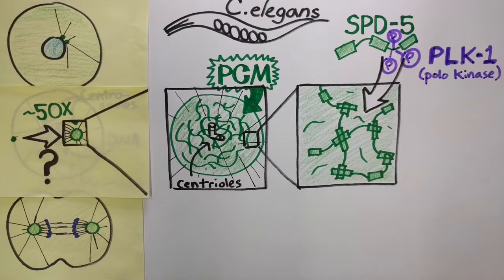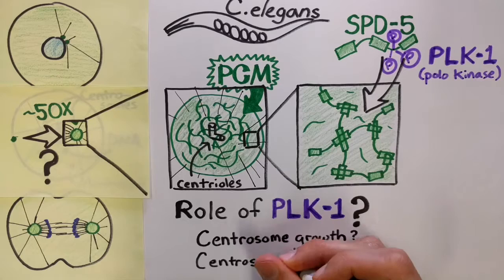So we asked ourselves, is it possible that PLK-1 phosphorylation of SPD-5 regulates centrosome growth and function, and if so, how?